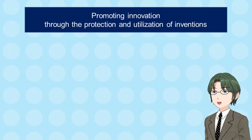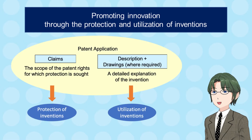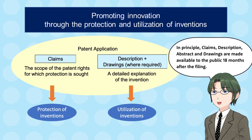Promoting innovation through the protection and utilization of inventions. A patent application consists of claims, description, and drawings. Claims contain the scope of the patent rights for which protection is sought, so that they work to protect inventions. Descriptions and drawings contain a detailed explanation of the inventions, so that they promote the utilization of inventions. In principle, claims, description, abstract, and drawings are made available to the public 18 months after the filing.